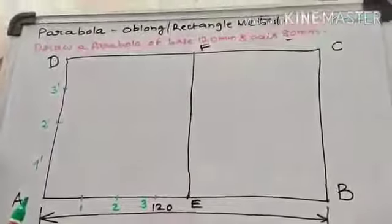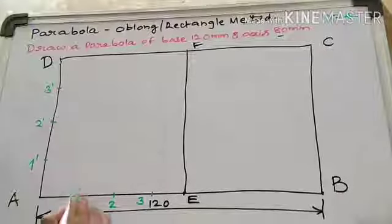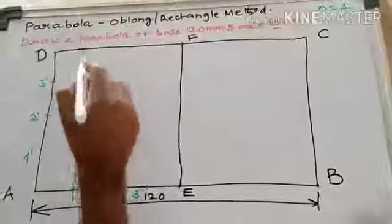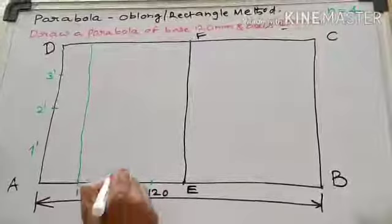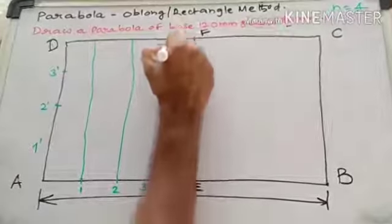Now, passing through first point, draw a perpendicular to AB. Like this. Passing through second point, perpendicular to AB. Passing through third point, perpendicular to AB.